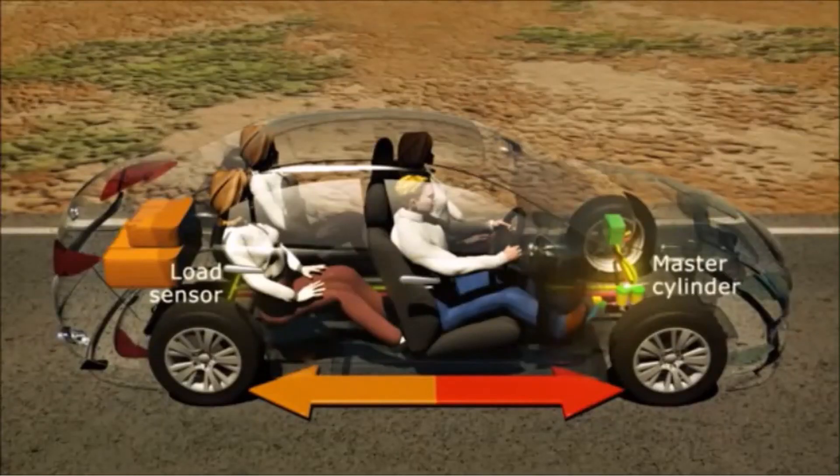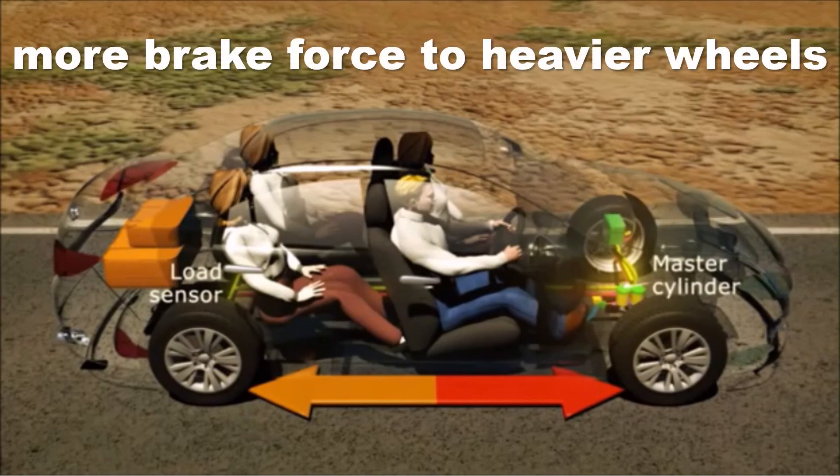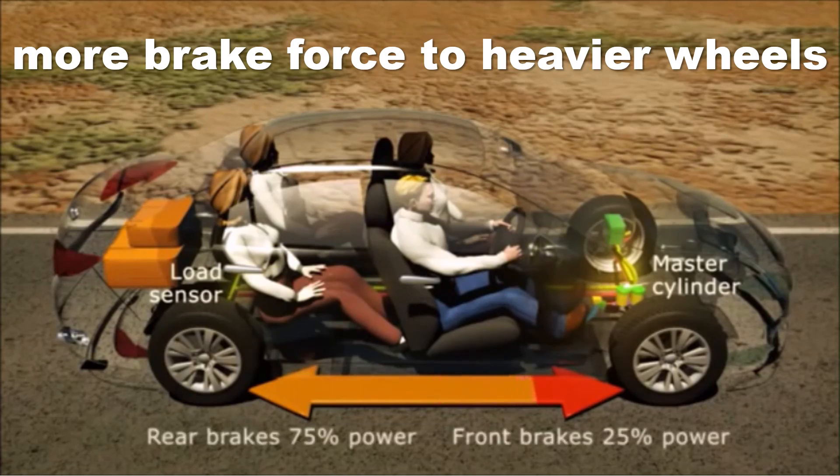The system allocates more brake force to the wheels that shoulder more weight to avoid a brake lockup caused by applying too much brake force to the wheels with less weight load.